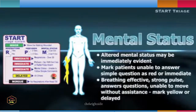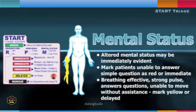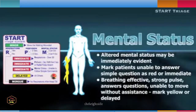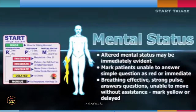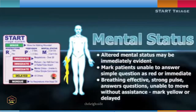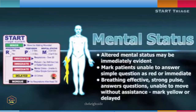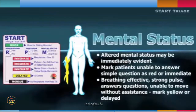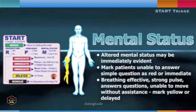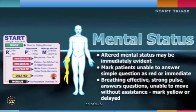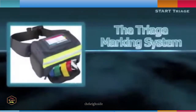If the patient is breathing effectively, has a strong radial pulse, and answers all questions appropriately, but was not able to walk out of the immediate area with the walking wounded, tag the patient delayed or yellow. This patient most likely has an injury that is not life-threatening but will prevent them from moving. San Diego County utilizes the ribbon method for marking patient acuity levels during primary triage.